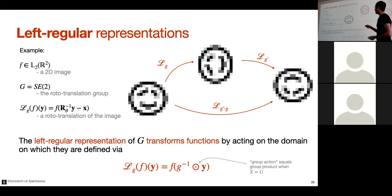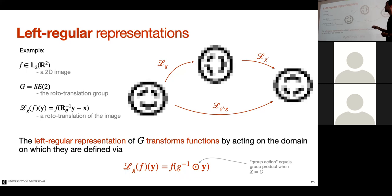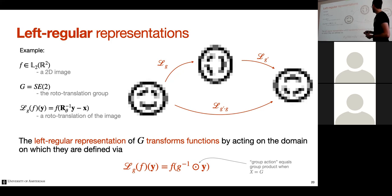As an example, for a function F in L²(R²) — square integrable functions on R² — and a group of roto-translations, we can define the left regular representation, which transforms such functions by letting the group act on its domain. This is the standard format: the group acts on the domain on the left-hand side, hence the name 'left regular representation.' There's a duality: we have the group acting on the function, which means applying the inverse of the group on the domain.